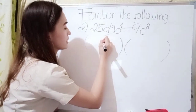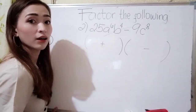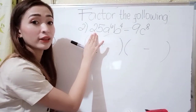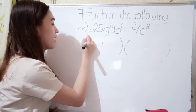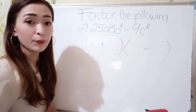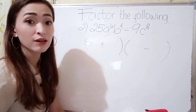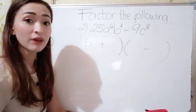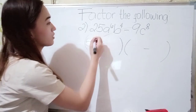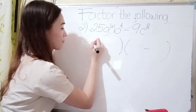In our right-hand side write plus, and then in our left-hand side minus. What is the square root of 25? That is 5, because 5 times 5 is 25. Next, we have a here, so just write a.